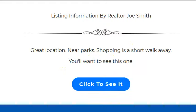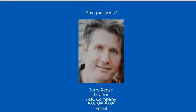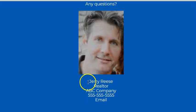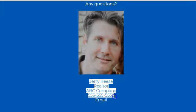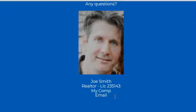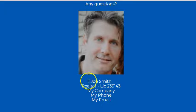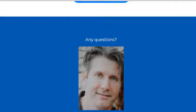Below here you have your area for the agent information. Just highlight this and type over it: Joe Smith, Realtor, license number, my company, my phone, my email. That's it. You don't want to put too much information — you don't even want to put your website, really, because you don't want them going there trying to find information. Just put your basic information right there.